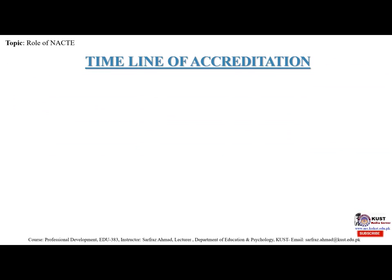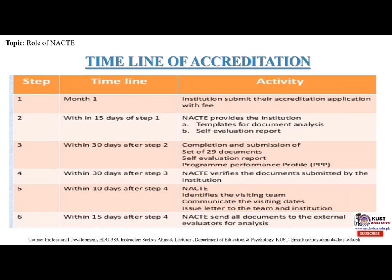The timeline of accreditation is as follows. Month 1: institutions submit their accreditation applications with fee. Within 15 days of Step 1: NACTE provides instructions such as templates for document analysis and self-evaluation report. Within 30 days after Step 2: institutions complete and submit a set of 29 documents, self-evaluation report, and program performance profile. Within 30 days after Step 3: NACTE verifies documents submitted by the institutions. Within 10 days after Step 4: NACTE identifies the visiting team, communicates visiting dates, and issues letters to the team and institutions.